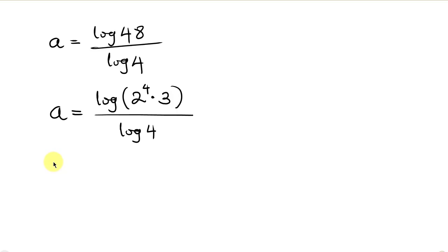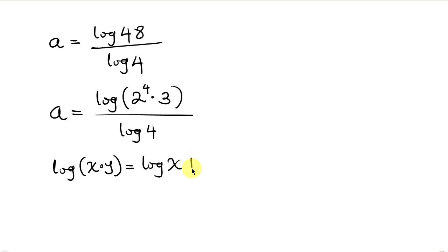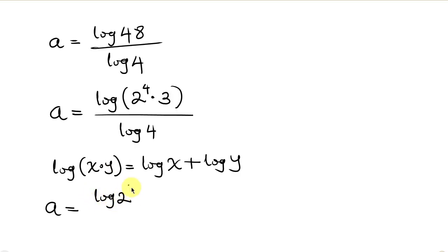Now our next step will be to apply the law of logarithm that says when I have the log of x times y, this can be written as log x plus log y. Applying this multiplication law here, the expression becomes log 2 to the 4th plus log 3, all over the denominator log 4.